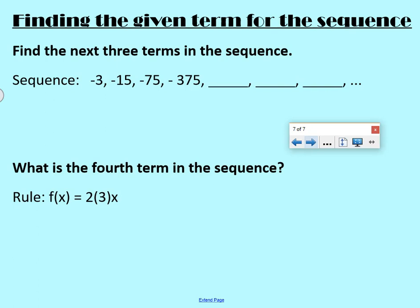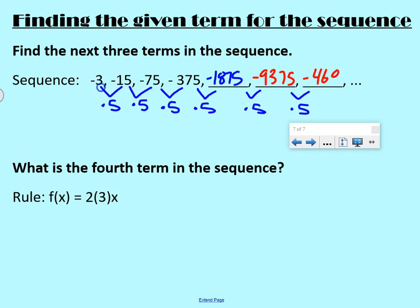Finding the given term for the sequence. We want to be able to find the next term. So we're going to find the next three terms in the sequence. So we have to find that pattern. We're going from negative 3 to negative 15. How could we do that? If we times by 5, we would get negative 15. Let's check. Is negative 15 times 5 negative 75? Yes, it is. And negative 75 times 5 is negative 375. So for each term, we're going to have to multiply the previous term by 5. So if we do negative 375 times 5, we get negative 1875. So that's our next term. Then we want to find the following one. So we're going to multiply that number by 5, and we're going to get negative 9,375. And then we multiply that again by 5, and we get negative 46,875.